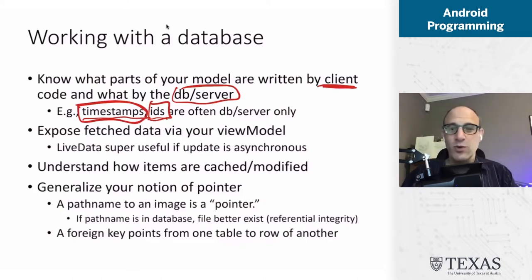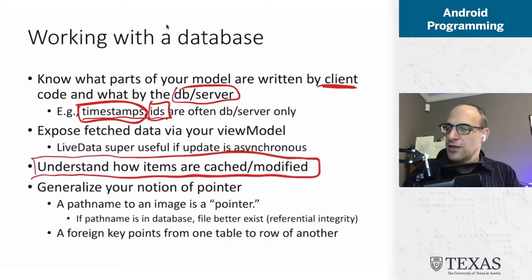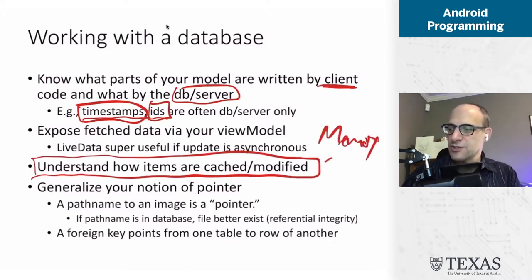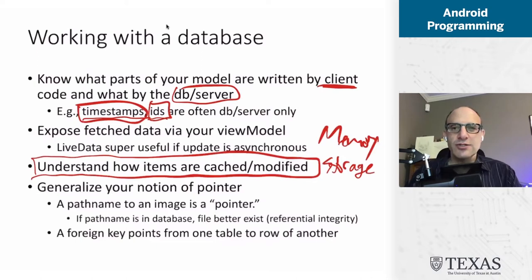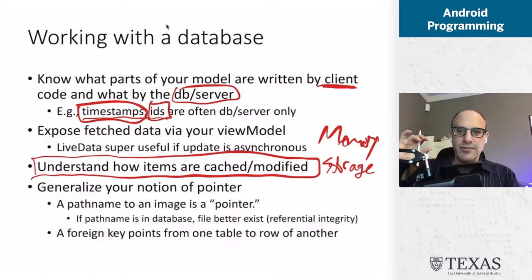So it's important to know what parts of your model are written by the client and what was written by the server. Along those lines, there's the in-memory representation of your data, and there's the storage representation of your data. You should understand when you're pulling things from storage into memory, and when you're moving things from memory back into storage.